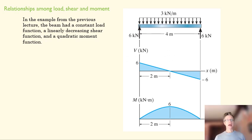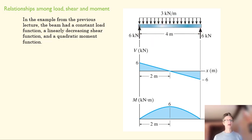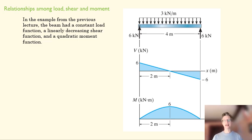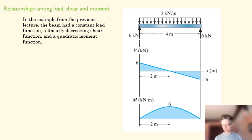In the previous lecture we looked at a simply supported beam and found that the beam had a constant load function, the shear had a descending linear relationship, and then there was a quadratic function for the moment diagram.